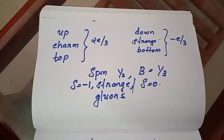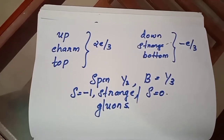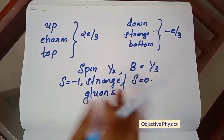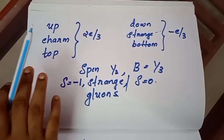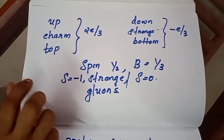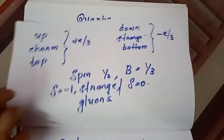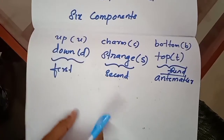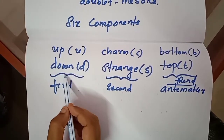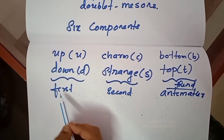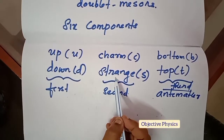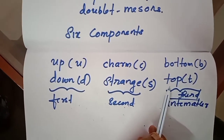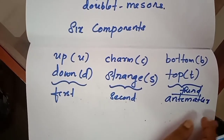The six flavors of quarks can be divided into three different categories called generations. The up and down quarks belong to the first generation, charm and strange belong to the second generation, and top and bottom belong to the third generation.